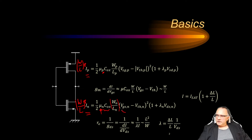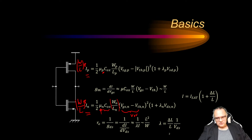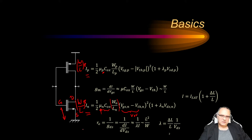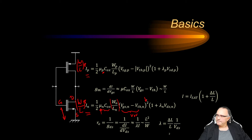We also have the overdrive voltage, which shows how much the transistor is turned on. This is the gate-source voltage VGS minus the threshold voltage — so this is how much we turn on the transistor. For the PMOS transistor it is very similar, except we consider the source-gate voltage instead of gate-source voltage.